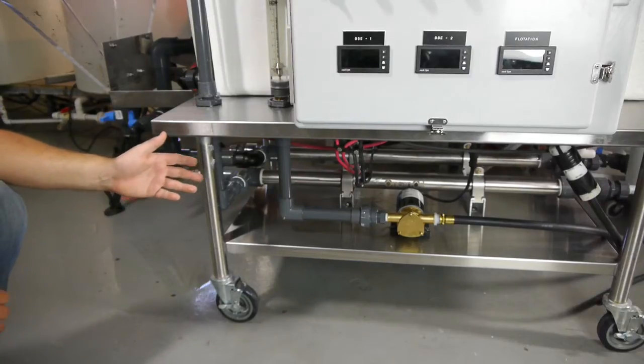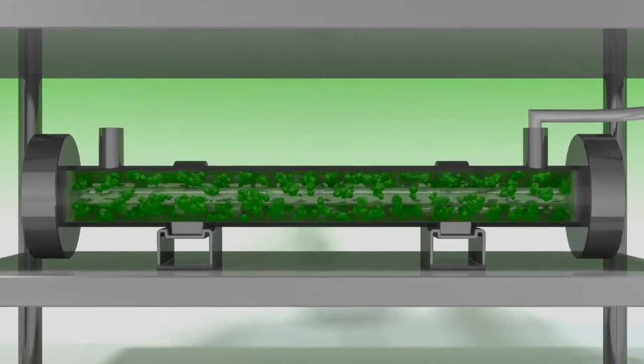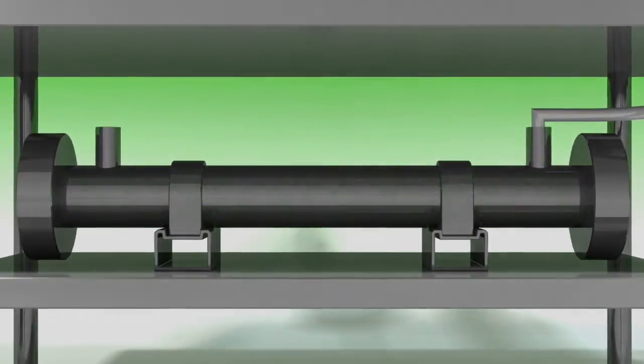We're going down into these tubes which is the Origin Oil patented single-step extraction process. It runs through these tubes where the particles in the water coagulate and cluster together. Then those particles travel to the tank where they connect and go into the flotation tank.